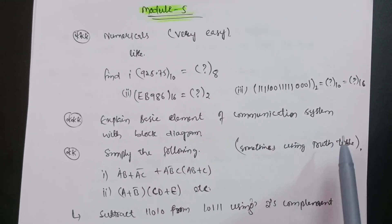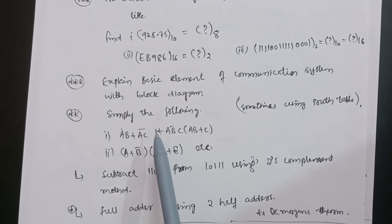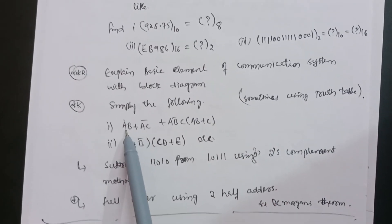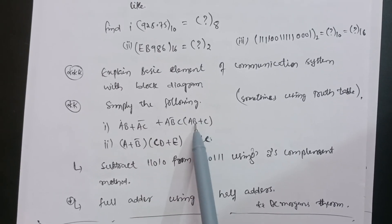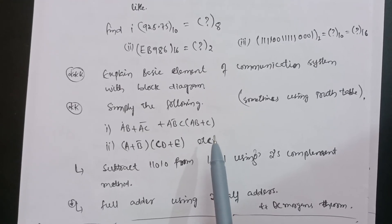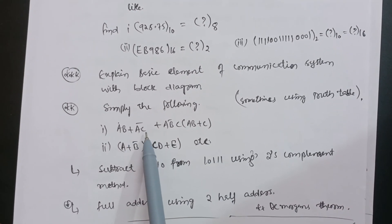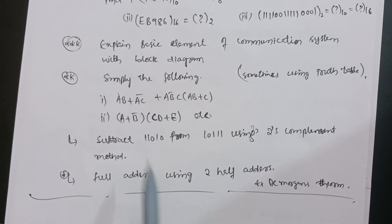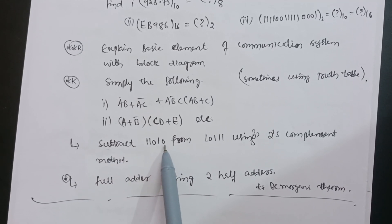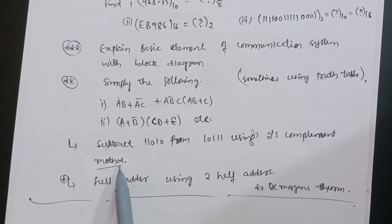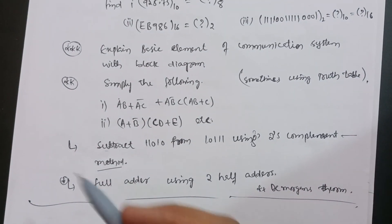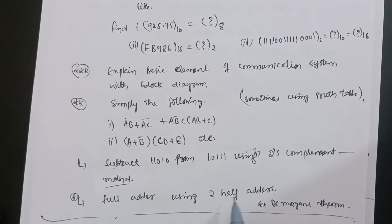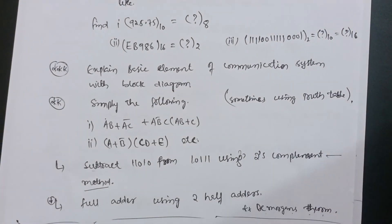There are also easy numericals involving truth tables. Simplify Boolean expressions such as AB + AC' + AB'C into AB + C, using De Morgan's theorem — these are simple concepts from 11th PU Mathematics. Also simplify expressions like (A+B)' · CD + E, and practice subtraction using two's complement — for example, subtract 11010 from 10111 using two's complement. Focus on these problems to get 10 to 12 marks. Also cover the full adder using two half adders and De Morgan's theorem.